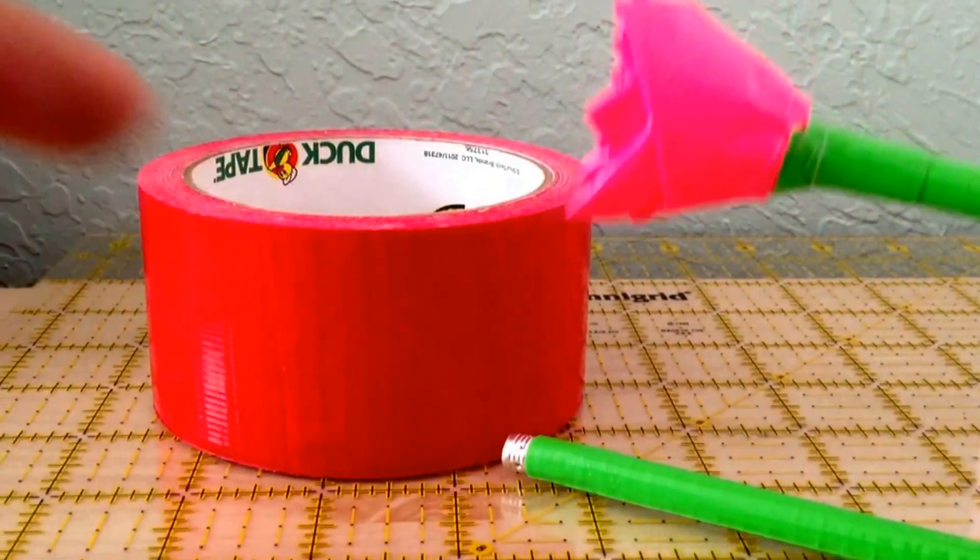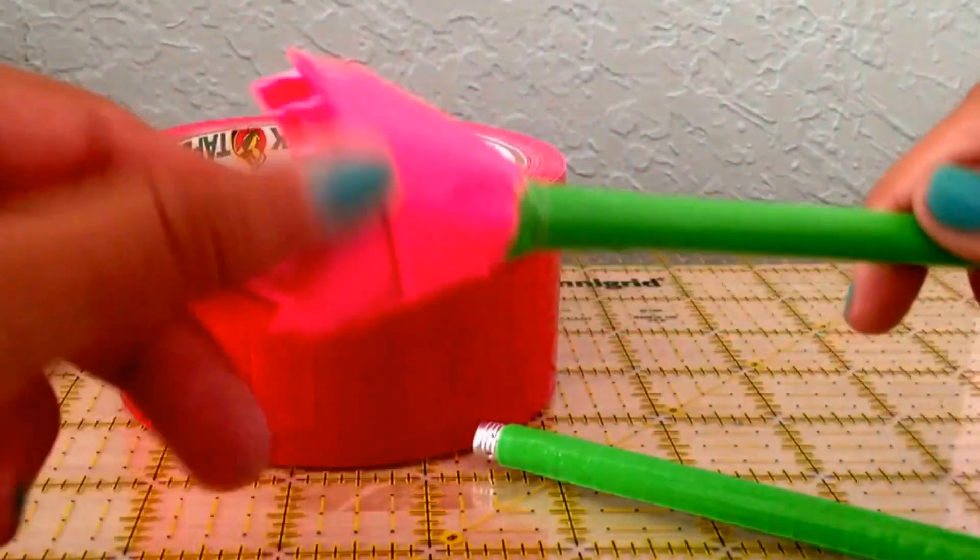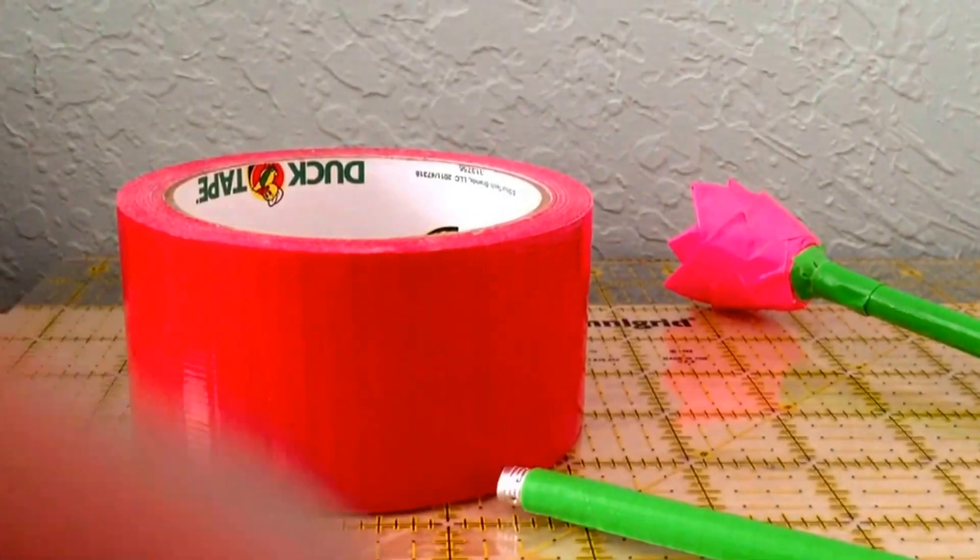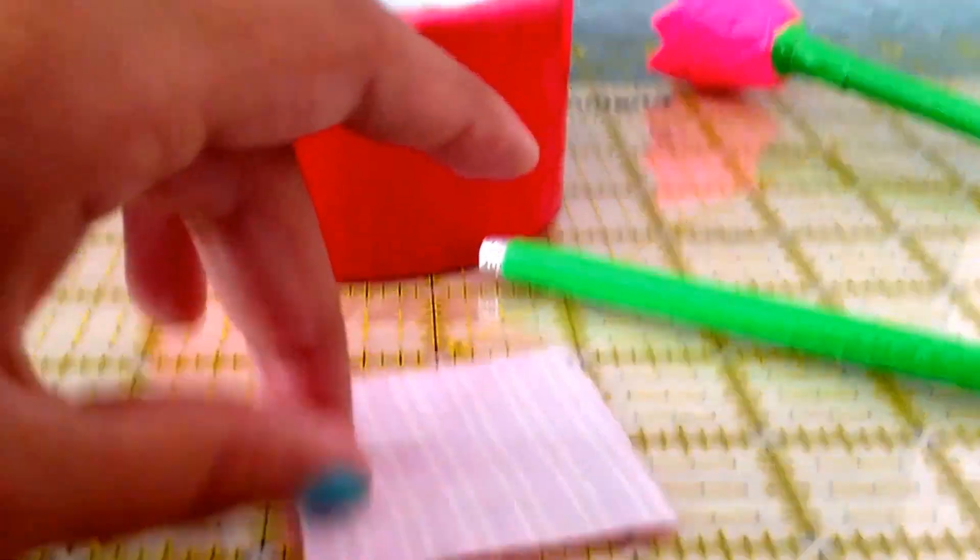Now, take the roll of duct tape that will be used as your petals, like in this flower. I will be using red. Now, take a strip that is two inches long, like this one.